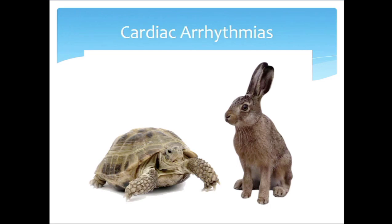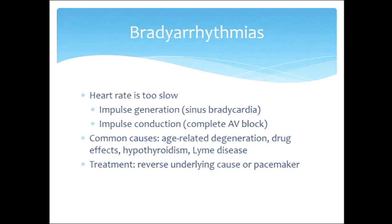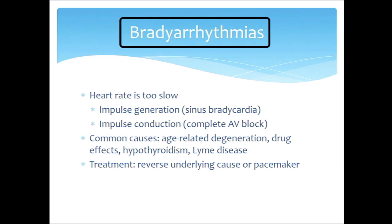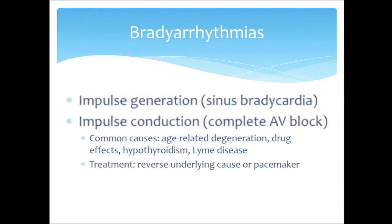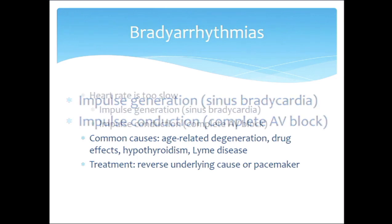Cardiac arrhythmias come in two varieties: fast and slow. We'll start with the bradyarrhythmias. These are fairly straightforward — the heart rate is too slow, and it can essentially be one of two problems: either there's an issue with the generation of electrical impulses, which generally implies a problem with the sinus node, or there's a problem with conduction of those impulses, like a block in the atrioventricular node or some issue with the His-Purkinje system. Either you're not starting enough, or you're not conducting enough.